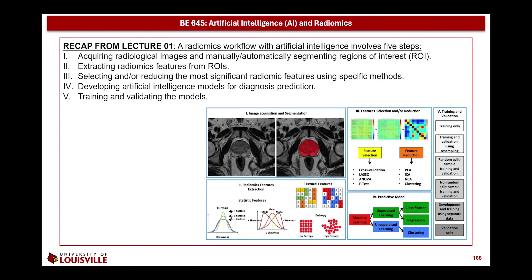Then we need to extract the features, which is what we did in the previous couple of lectures — extracting GLCM features, first order features, and size zone matrix features. We can then apply feature selection and reduction before applying classification or prediction. Finally, we apply training and validating the model and selecting the optimal one.